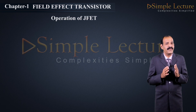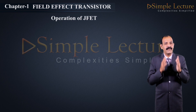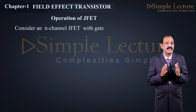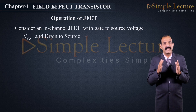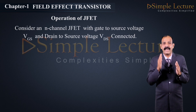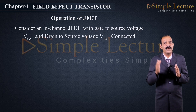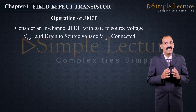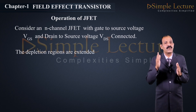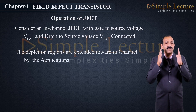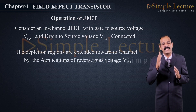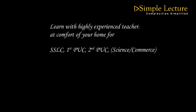Operation of JFET: Considering an N-channel JFET, with gate-to-source voltage VGS and drain-to-source voltage VDS, the depletion regions are extended towards the channel by the application of reverse bias voltage VGS.